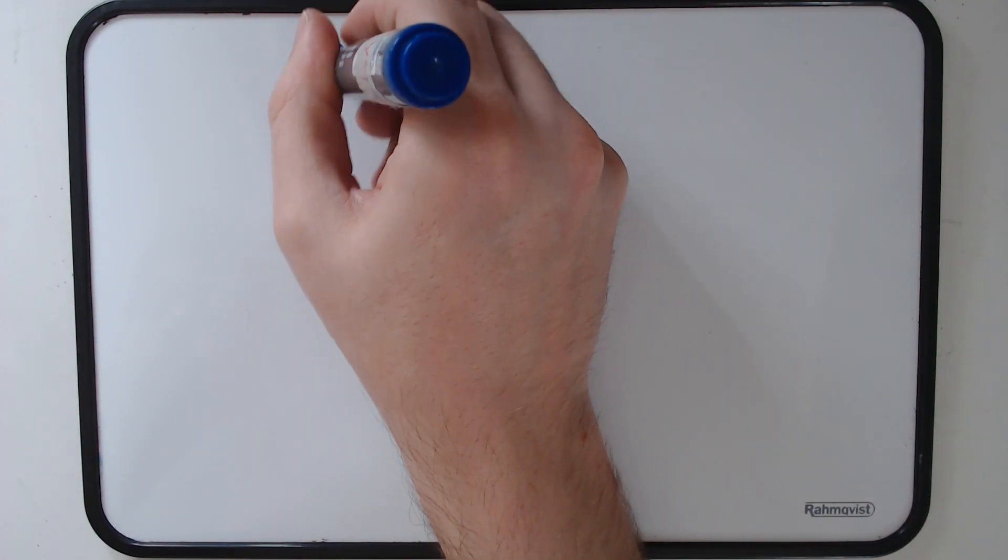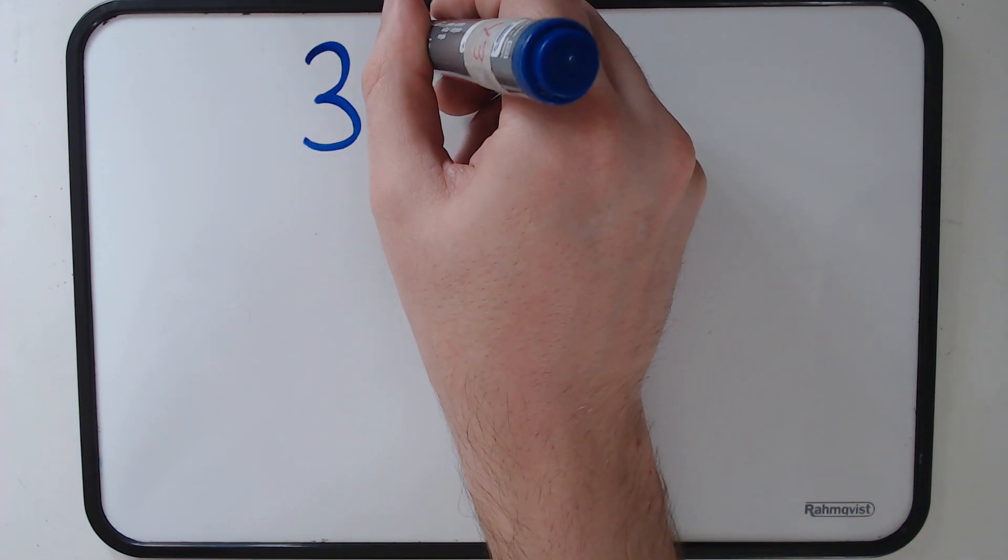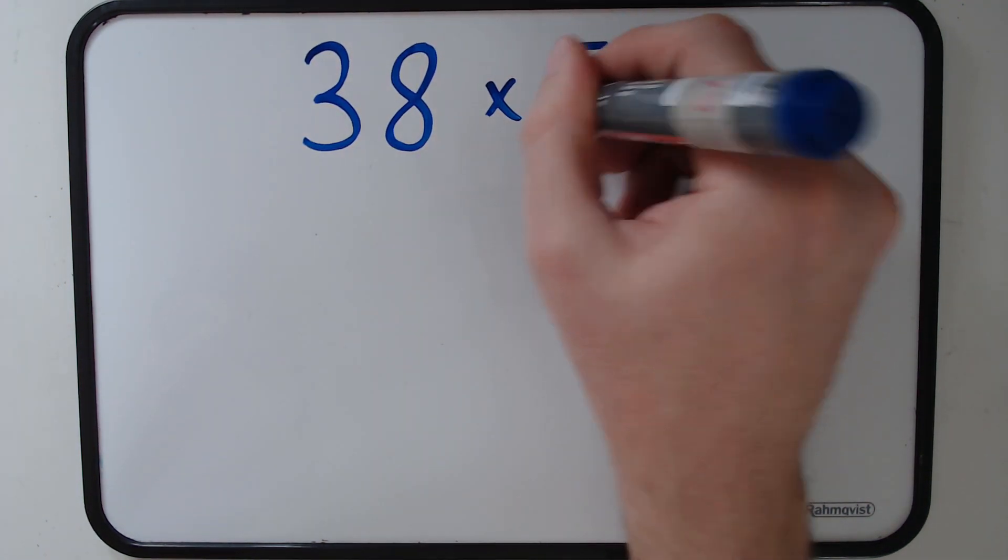Hi everyone, just making a quick video on short multiplication using the column method. We're going to start off with a two-digit times by one-digit or single-digit number, so in this case it's 38 times by 5.